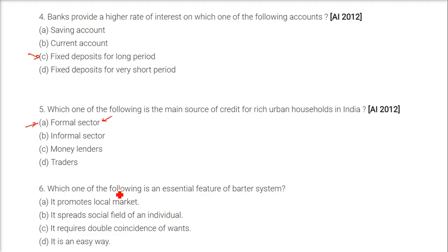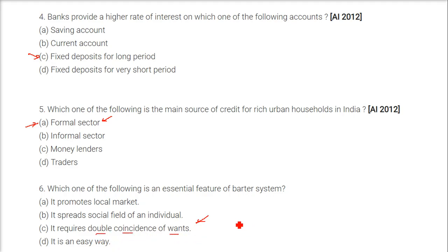Which one of the following is an essential feature of the barter system? It requires double coincidence of wants.